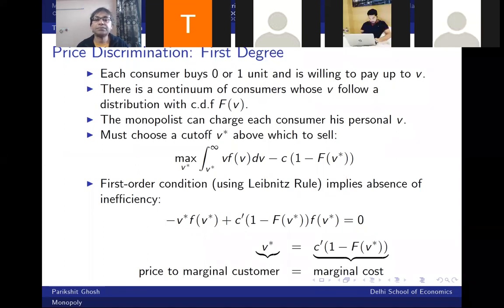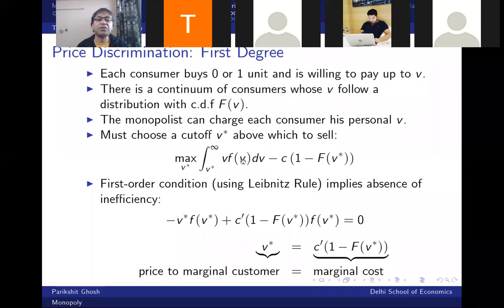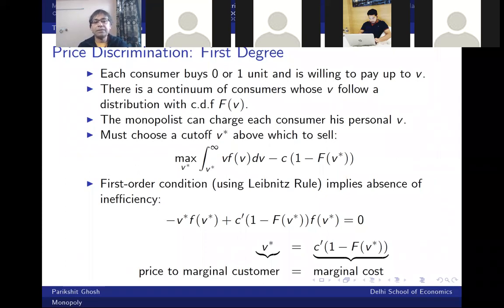A student asks about the difference between capital F(V) and small f(V). Capital F(V) is the distribution function — it represents the total proportion of consumers whose willingness to pay is V* or less. Small f(V) is the density function — the proportion of consumers whose valuation is exactly equal to that argument. Capital F is cumulative; small f is the individual frequency.